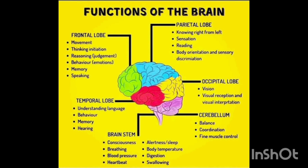The parietal lobe plays an important role in sensation, reading, body orientation, and discrimination. The temporal lobe plays a key role in understanding languages.